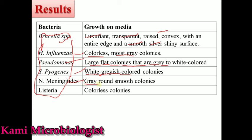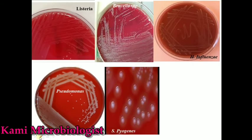Overall, most bacteria produce gray-colored colonies, with minor differences: some are light gray, dark gray, shiny gray, or moist gray — just slight differences in shade. Listeria monocytogenes produces colorless colonies. As shown in the images: Listeria monocytogenes shows colorless colonies; Brucella species shows very small, round, luxuriant growth — typical of Brucella.